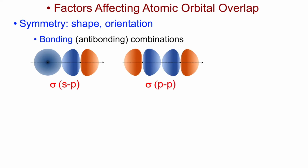Here's the example we have shown before, where two p orbitals in the orientation shown are clearly compatible with bonding interactions. As they approach in this orientation, I get in-phase sigma overlap, and then I can change the orientation of one of them to get the anti-bonding combination.